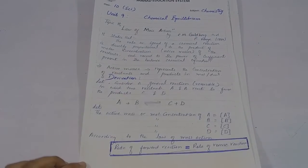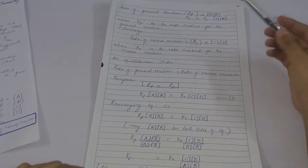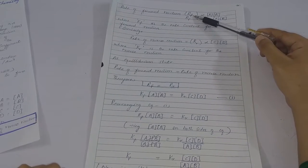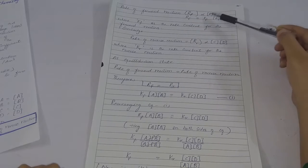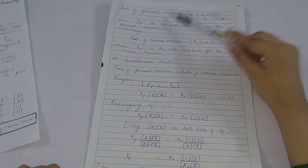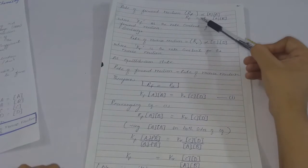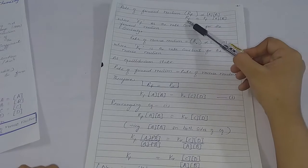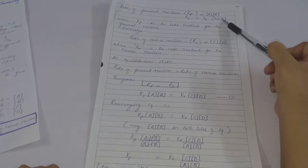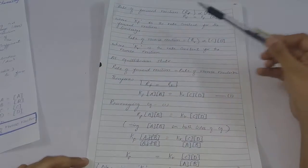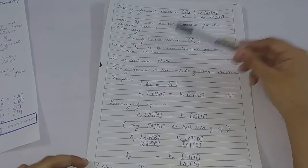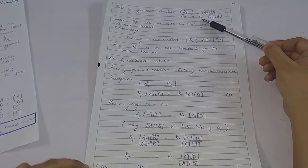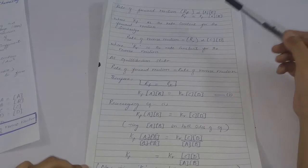The rate of the forward reaction is represented as RF, which is proportional to [A][B], since A and B are the reactants. Removing the proportionality sign, we get RF = KF × [A][B], where KF is the rate constant for the forward reaction.